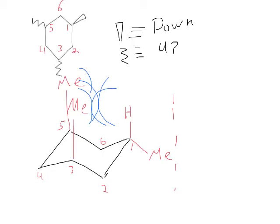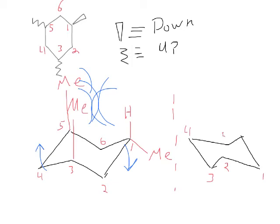However, we don't necessarily know yet whether this is going to be the least stable conformer, because we haven't seen the other one. Let's draw the other conformer — the opposite chair structure. Because we're flipping, pulling that point down and pushing that point up, carbon 1 is going to be in the bottom right corner of this conformer. So 1, 2, 3, 4, 5, and 6. We put in our methyl groups keeping the relative direction the same — either up or down — but they're going to be exchanging axial for equatorial positions.